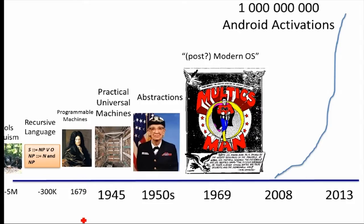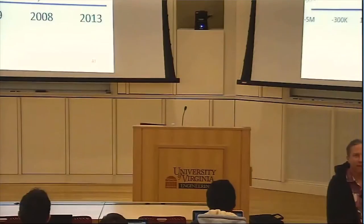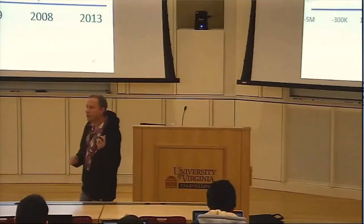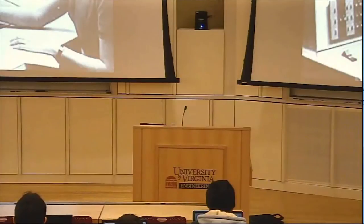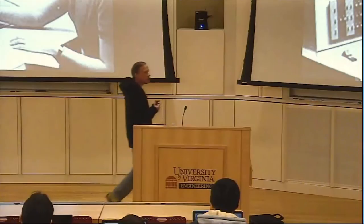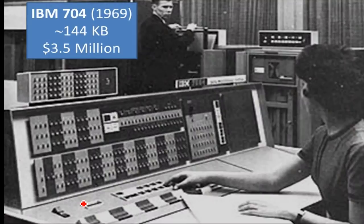Certainly everything was slow relative to what we're used to today, because computers were slow compared to today. But they get faster without needing to do anything. Needing something simpler is definitely getting at the answer. The reason you needed something simpler was really how much memory you needed to run Multics. If you wanted to run Multics in 1969, you needed what was then a really obscene amount of memory — over a hundred kilobytes. Back in 1969, that cost you many millions of dollars.